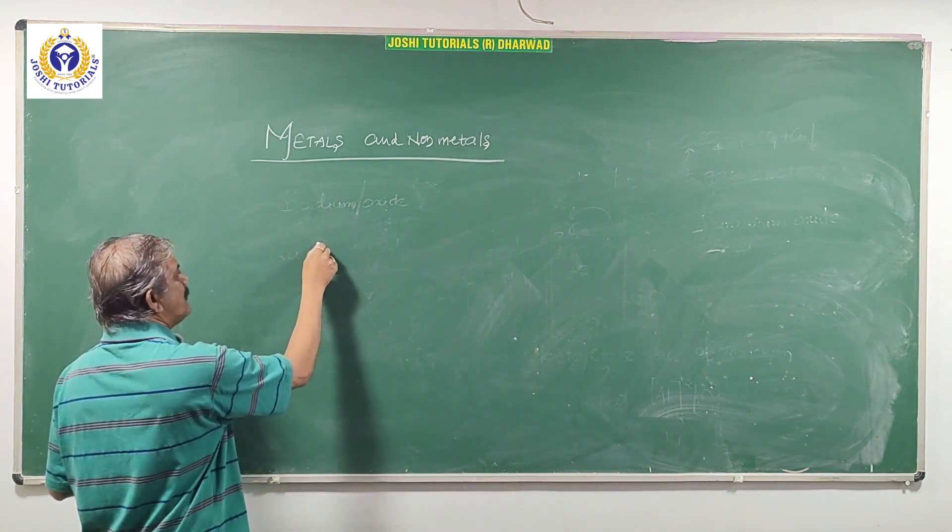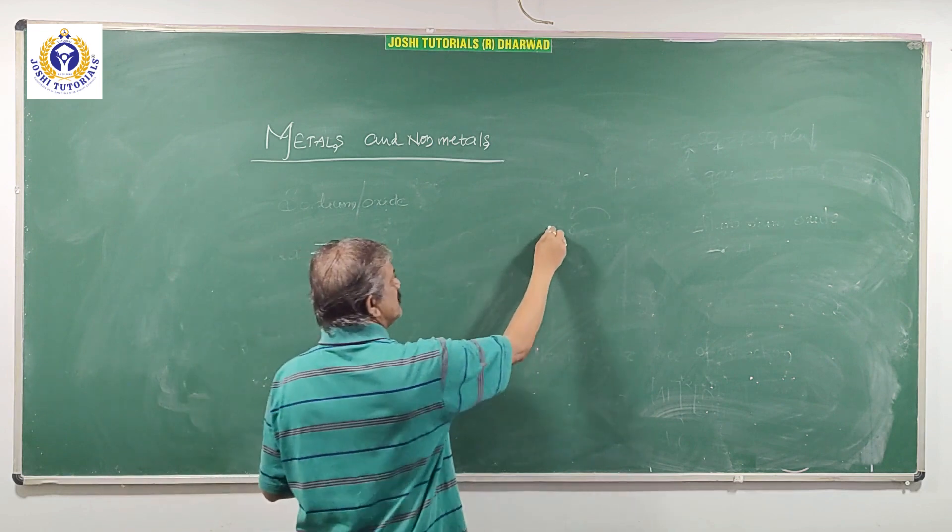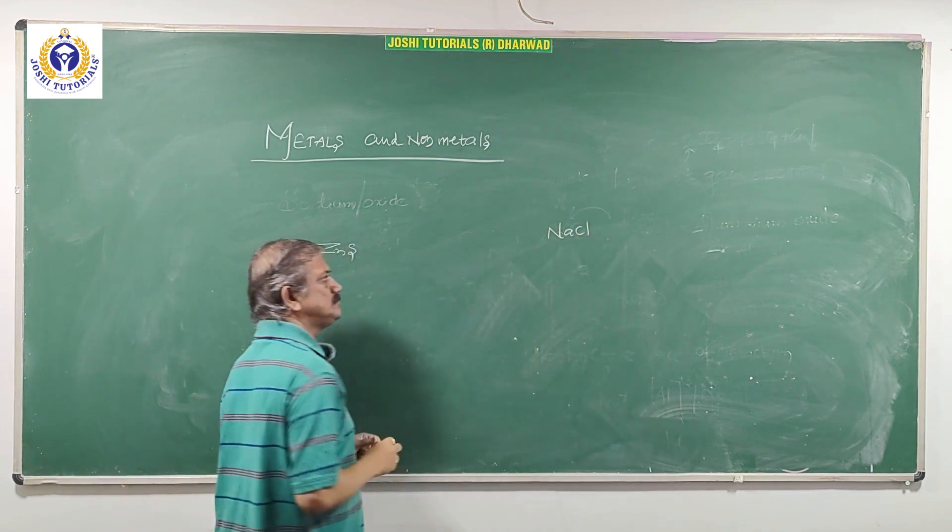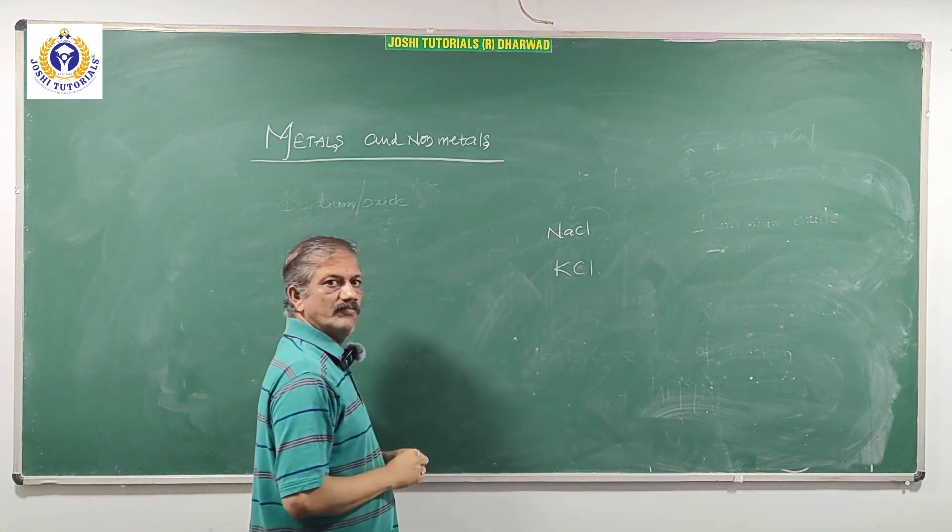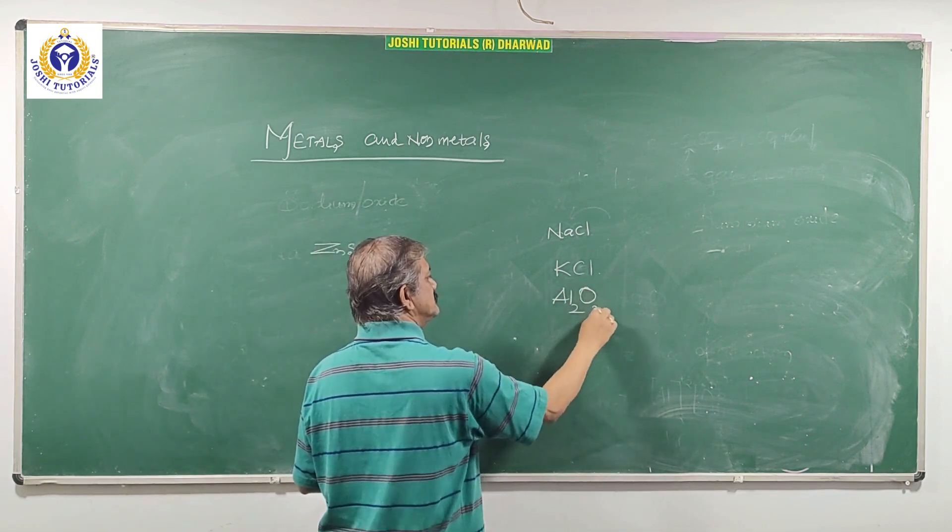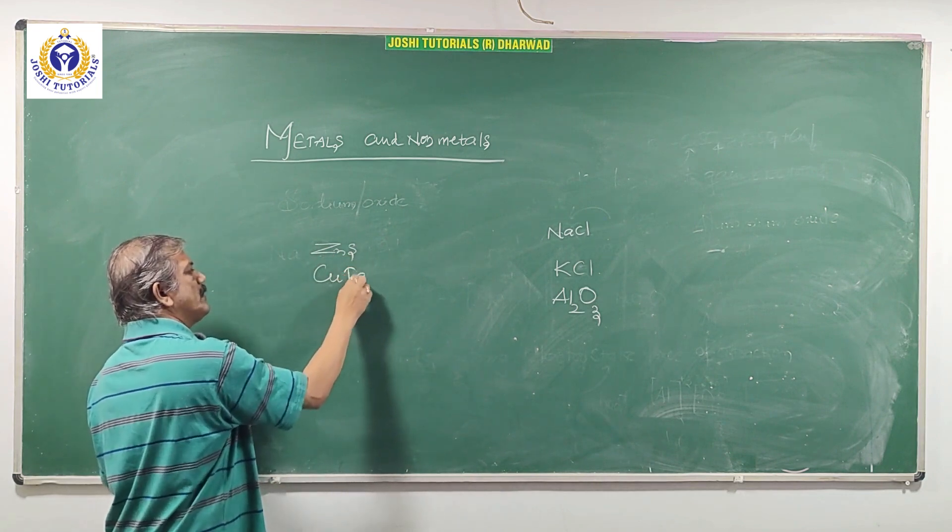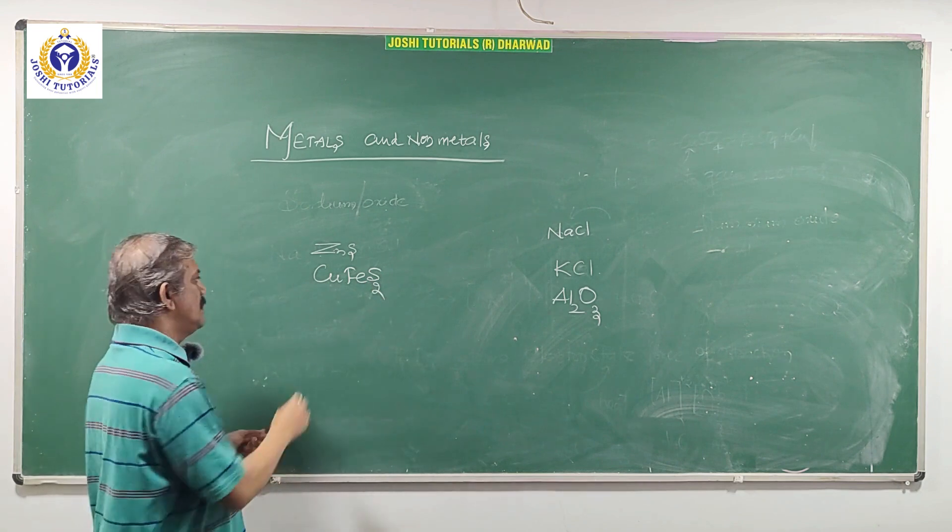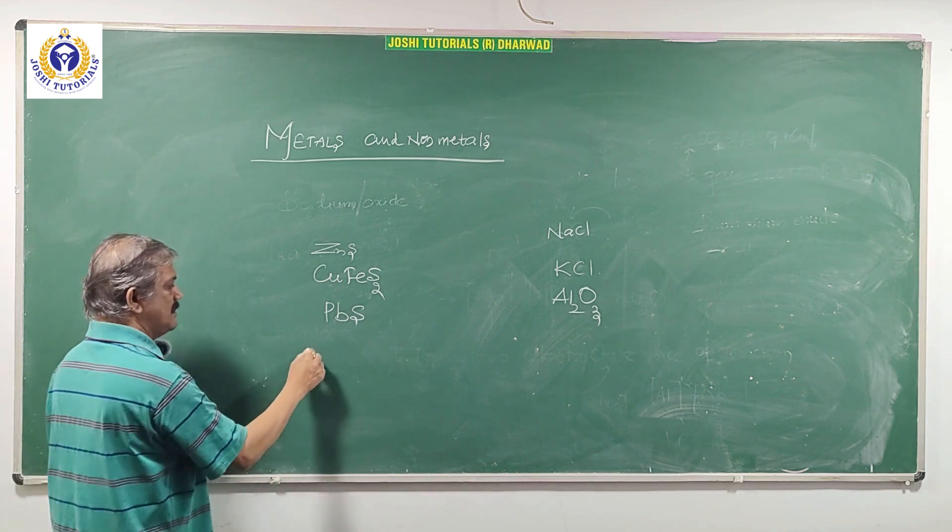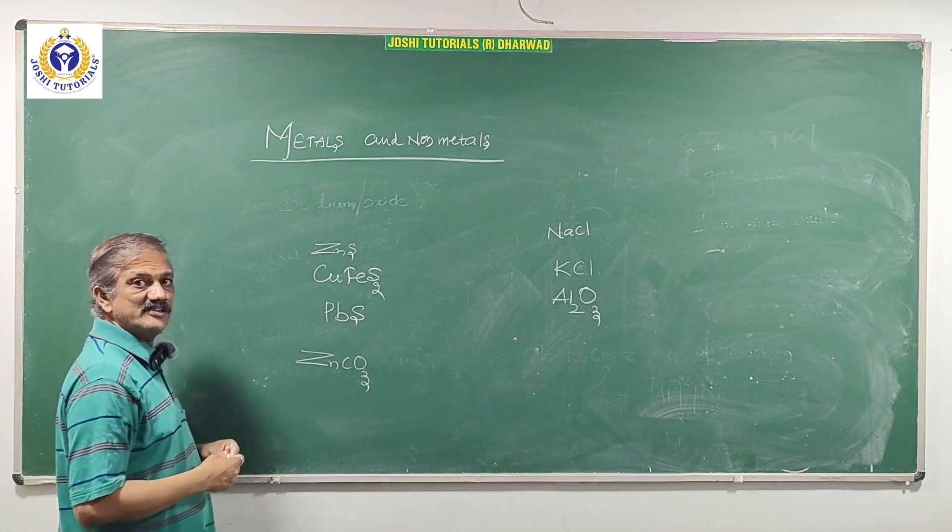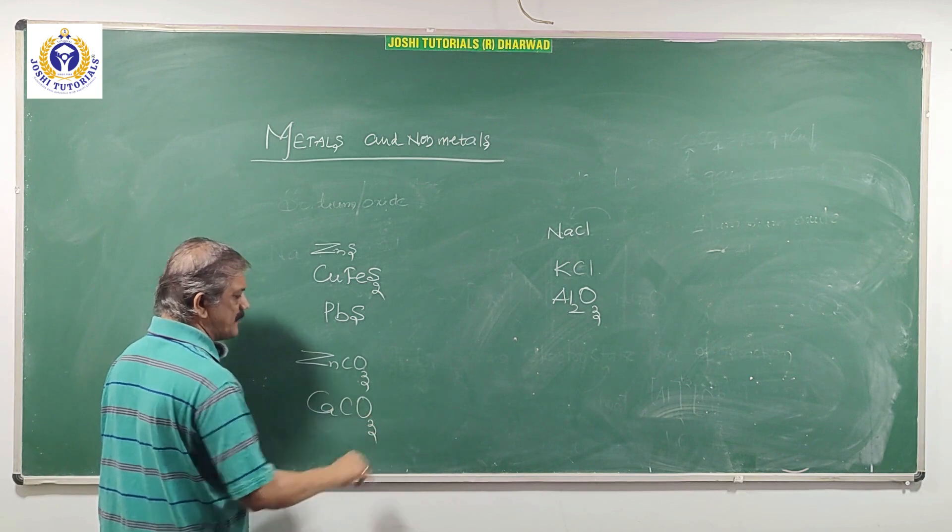For example, zinc sulfide, sodium chloride, potassium chloride, aluminum oxide, zinc sulfide, copper pyrites, PBS lead sulfide, zinc carbonate ZnCO3, calcium carbonate CaCO3.